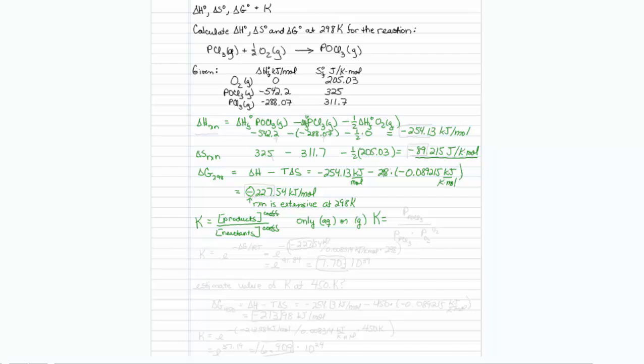So for our particular materials, everything is in the gaseous state, and we can also represent those as pressures. So I will take the pressure of POCl3 on top. That is my product. I will also have the pressure of PCl3 on the bottom. Both of these are to the first power, but the pressure of O2 will be to the one half power, since a one half coefficient is in front of the oxygen.